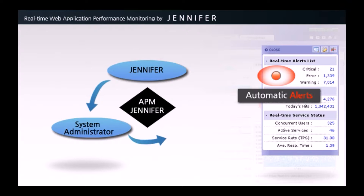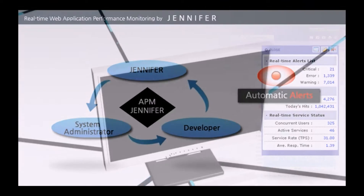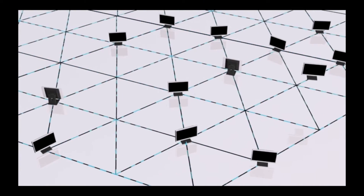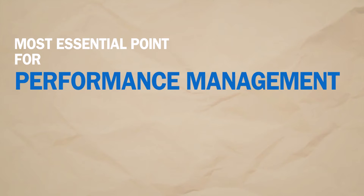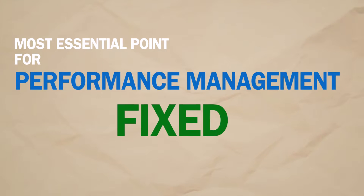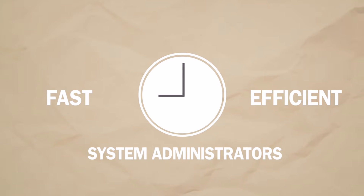It is important for system architects to be able to understand what their web application looks like at one glance, and what web services are running currently. However, the most essential point for performance management is for problems to be identified and fixed as soon as possible, and that depends on how actively system administrators monitor the system status.